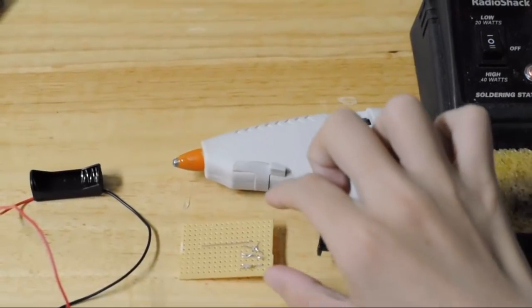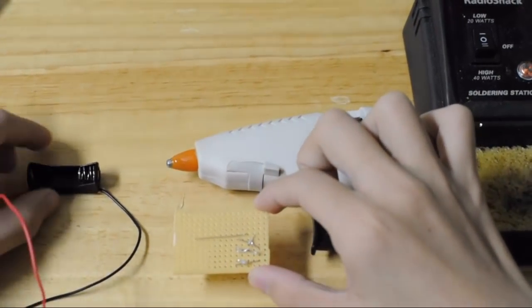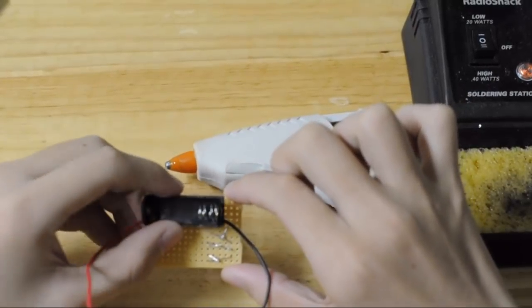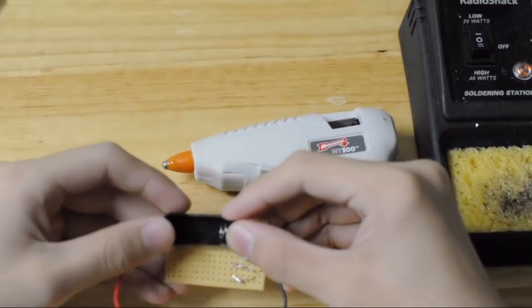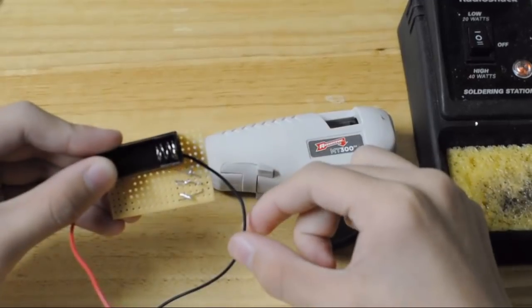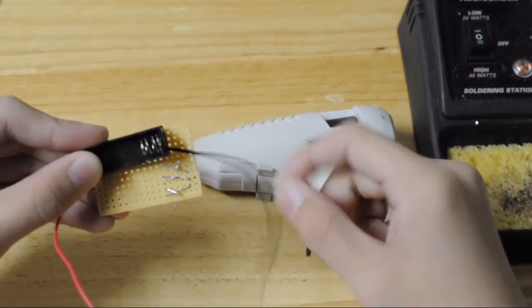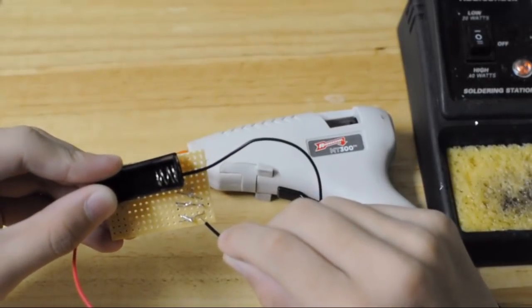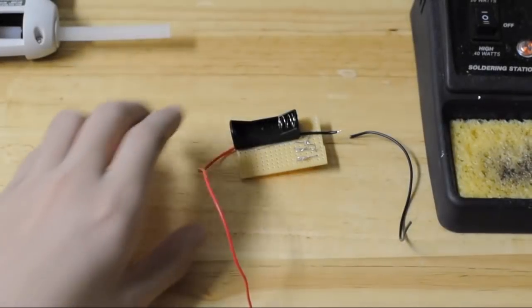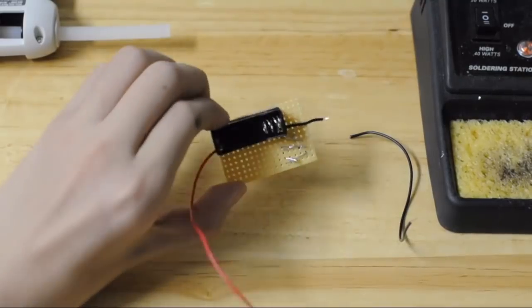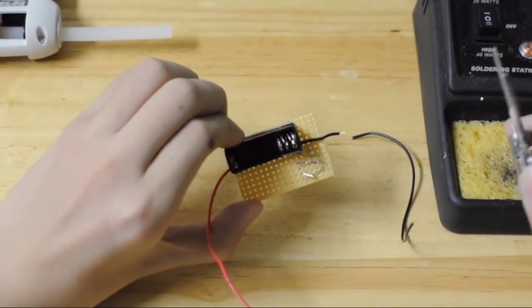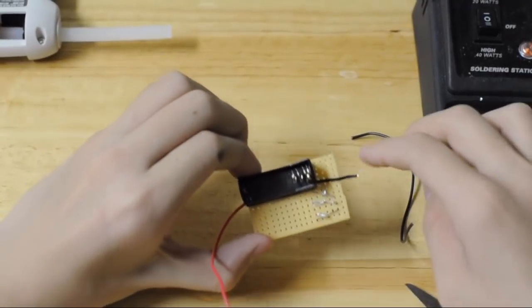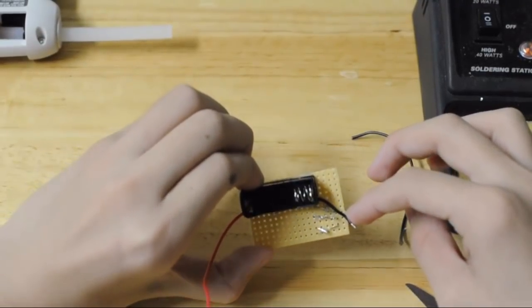Now we need to hot glue the battery holder to the top left of the perfboard. Make sure the wire on the right side of the battery holder is the negative wire. We are going to be soldering it to the last leg of the transistor later on. After your battery holder is hot glued on, use a pair of scissors and cut the wire so that it reaches the last leg of the transistor without sticking out.